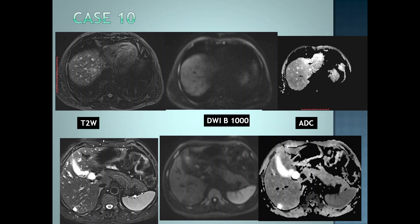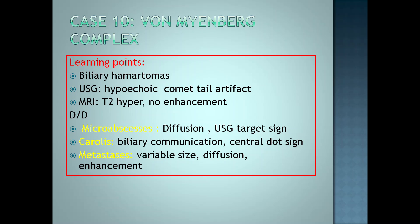The 10th case: these are T2-weighted images, diffusion B1000 images, and ADC maps. We see in the top and bottom panel portions there are multiple T2 hyperintense small lesions in the liver which do not show any diffusion restriction. The 3D MRCP image shows multiple well-defined T2 hyperintense lesions with no biliary communication, all measuring 5–6 mm or less. The diagnosis is von Meyenburg complexes, also known as biliary hamartomas. On ultrasound, these are characterized by hypoechoic lesions with comet-tail artifact. On MRI, there will be T2 hyperintensity, no enhancement, and no diffusion restriction. Caroli disease is differentiated on MRCP because there will be biliary communication and a central dot sign on T2-weighted images.